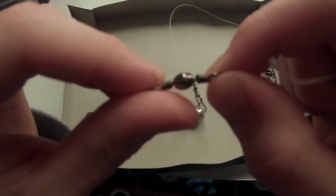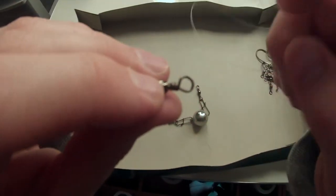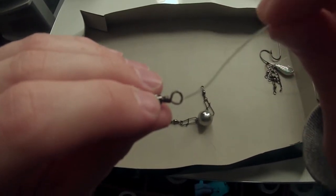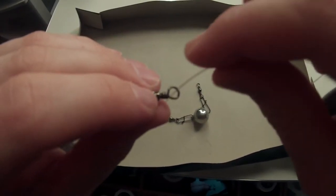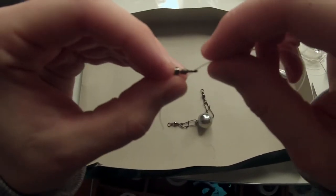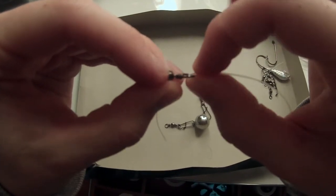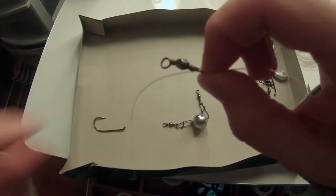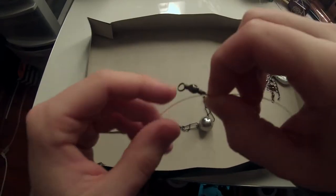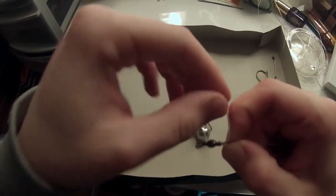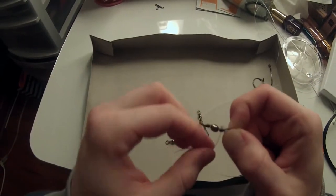To tie my fluorocarbon knots to a swivel or a hook, I use the same technique. Literally take the tip of the fluorocarbon, push it through the eye, maybe run through five to six inches. Hold your fingers at the top there. Take the loose tag end, wrap it around itself at the top a couple times, maybe two to three times, depending on the thickness.